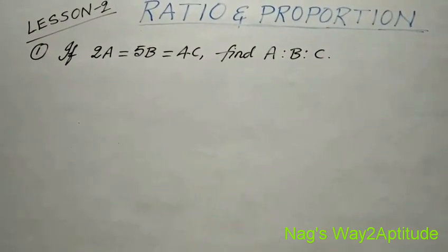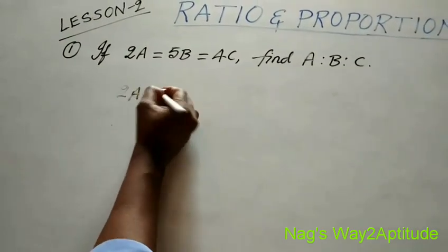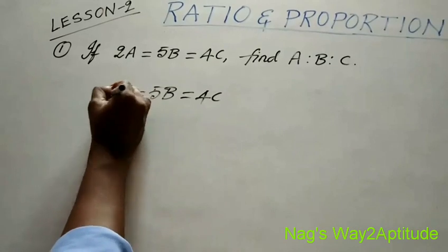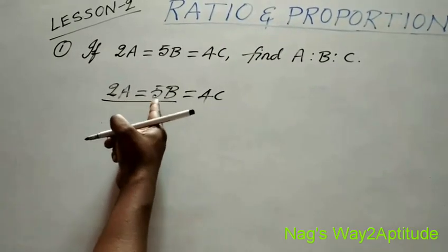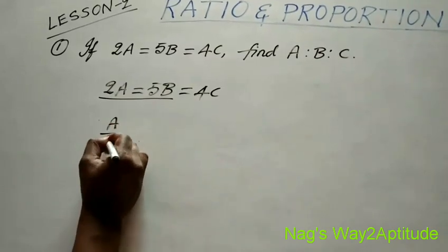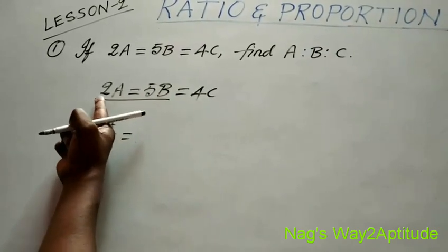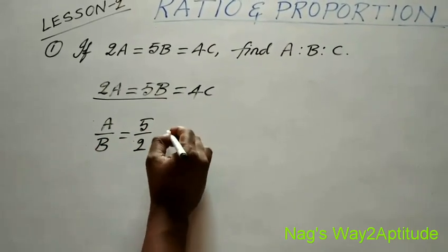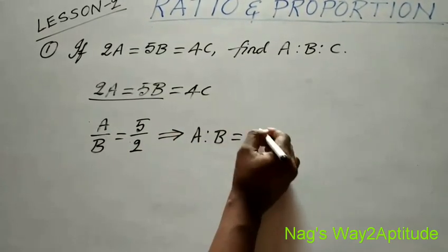After that, I will explain the shortcut. So here, 2a is equal to 5b is equal to 4c is given. First, you take these two terms: 2a is equal to 5b. The b comes here and it becomes a by b, and the 2 comes here and it becomes 5 by 2. So a by b is equal to 5 by 2. Therefore, a is to b is equal to 5 is to 2.